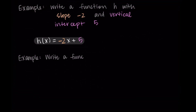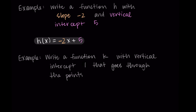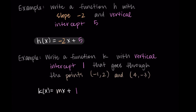Let's try a more involved example. Write a linear function k that has vertical intercept 1 and passes through the points (-1, 2) and (4, -3). We'll use slope-intercept form since we were given the intercept. Starting with k(x) = mx + b, I can already substitute b = 1. Now we just need to find the slope.